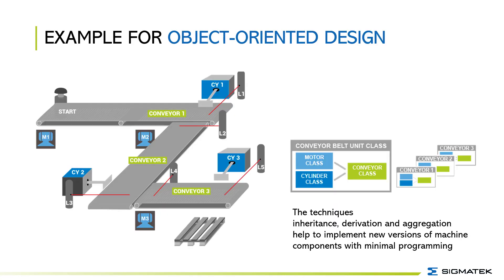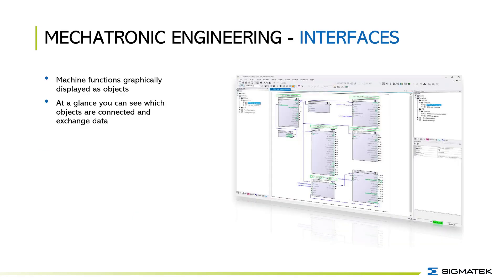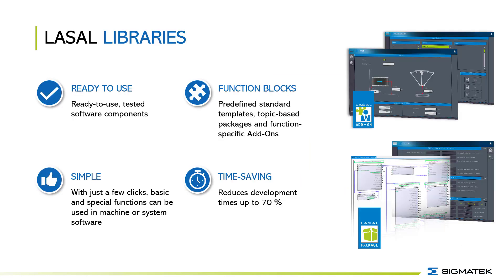I will explain object orientation with a conveyor belt example. Each conveyor belt is driven by a motor, has start and stop conditions, and a cylinder at the end that pushes the package further. Three classes are modeled for this purpose: motor and cylinder control, and conveyor belt with start and stop conditions. By aggregation — which means grouping — a complex class, a conveyor belt unit, can be created. These functions are graphically displayed as objects. At a glance you can see which objects are connected and exchange data. In LaSalle Class there are also libraries integrated — these are ready-to-use software components that you can insert with a few clicks into your project.